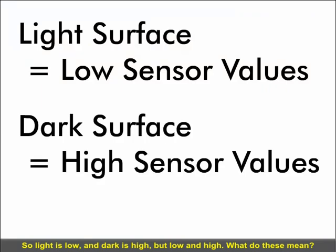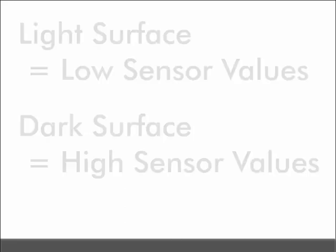So light is low and dark is high, but what do these mean? On the cortex, the sensor gives a light intensity reading of 0 to 4095.